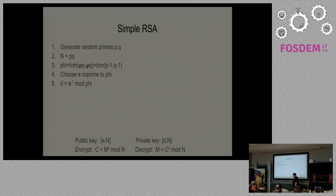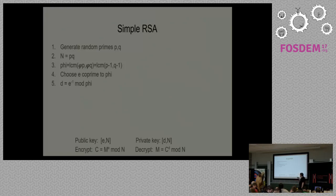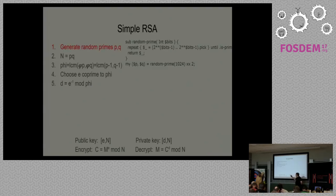Let me start with a very simple RSA example — we're going to generate a key. We want to generate a couple of random primes and take the product of the two. We take the LCM of the totients, which because they're prime is very easy. We choose an E, we get our D. Let me go through the Perl 6 code for this.